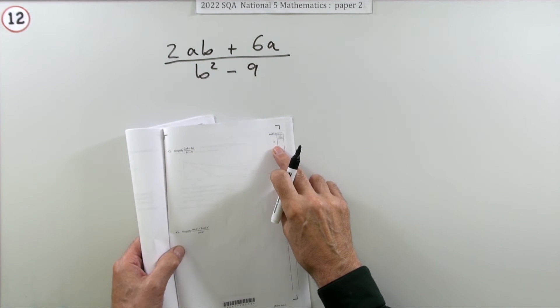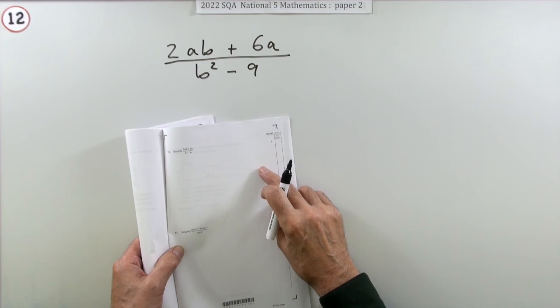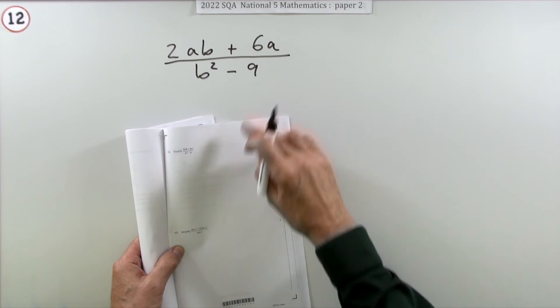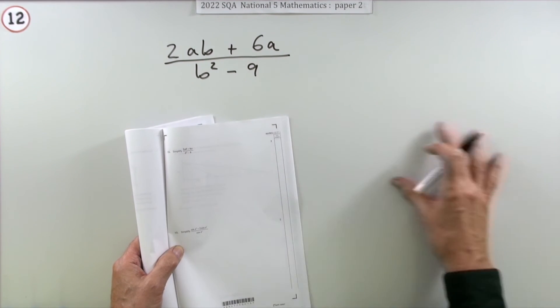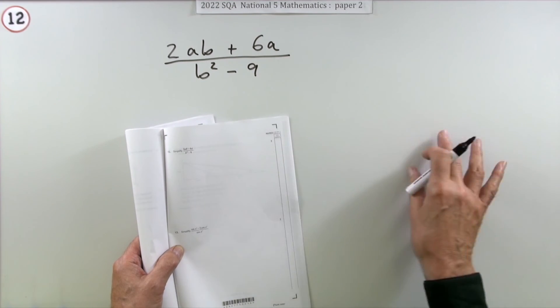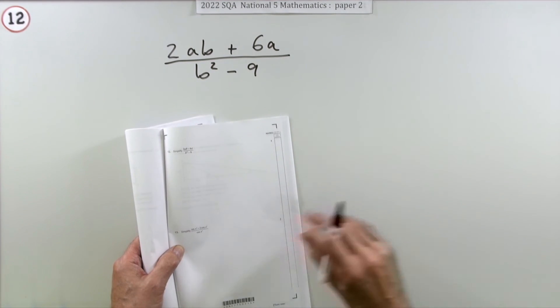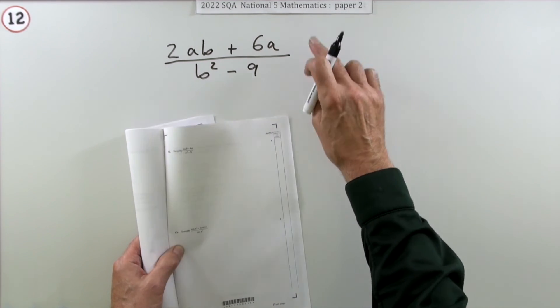Number 12, again for three marks. This time a nice little bit of algebra, so none of the rounding off. I always prefer the ones that are just algebraic or geometric rather than ones where you've got to do calculations and then worry about rounding things off and having to write loads of figures. Nice, neat, clean algebra here.